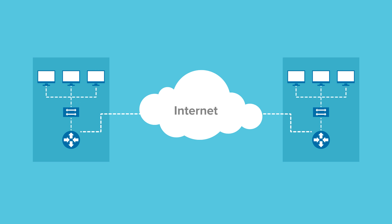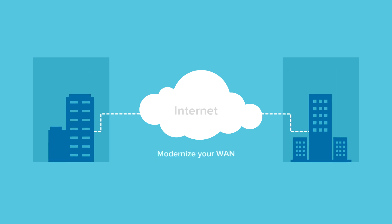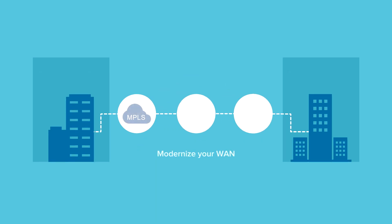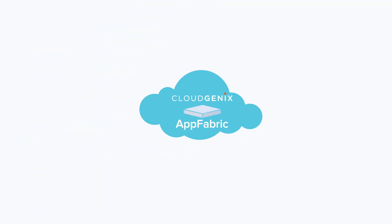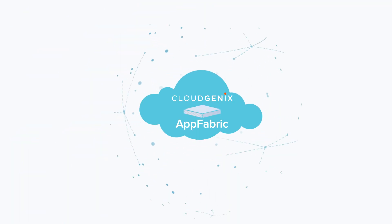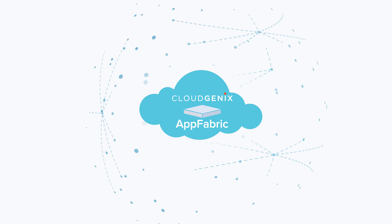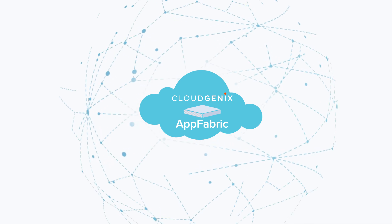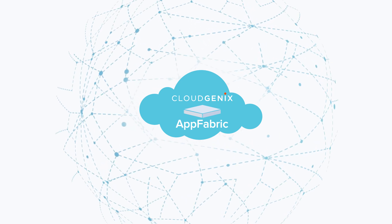So how do you modernize your WAN to take advantage of the cloud, reduce costs and eliminate complexity? The answer: App Fabric from CloudGenX, a radical new approach to networking.